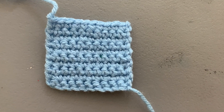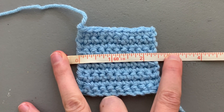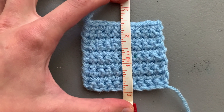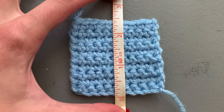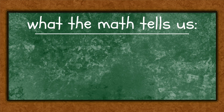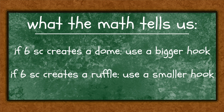The goal is a swatch like this blue one, where it is approximately the same width as height when working 10 by 10 stitches, but the width is just ever so slightly bigger than the height. So even if you don't care about the math at all: if working six gives you a dome, go to a bigger hook size; if you're getting a ruffle with too much fabric at the edge, go to a smaller hook size.